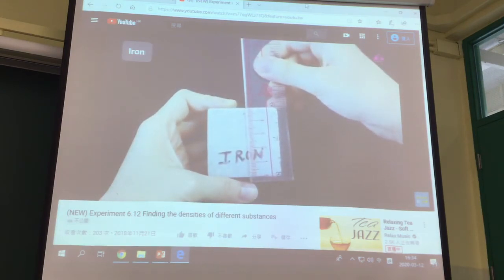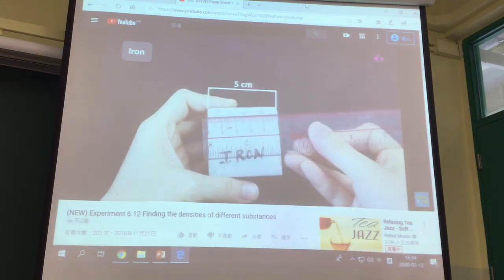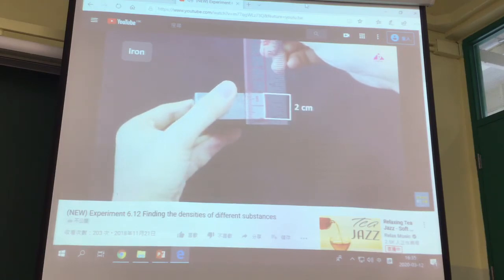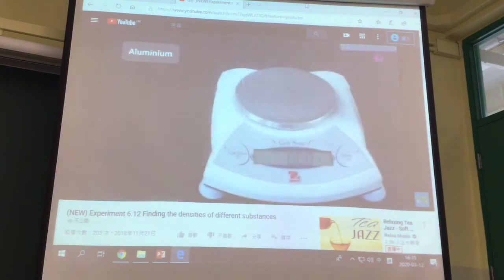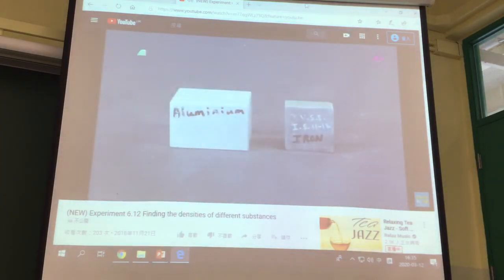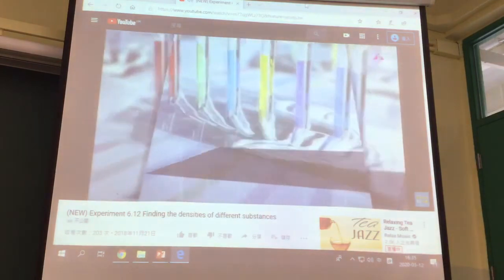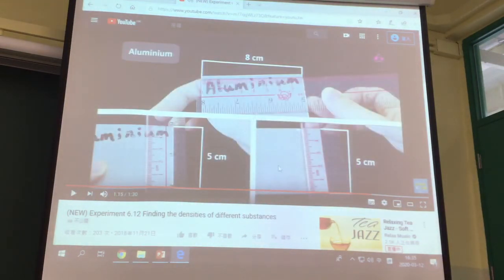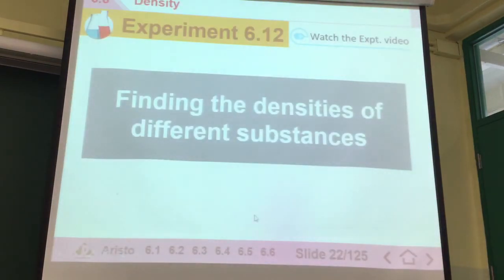Measure the masses and dimensions of the blocks, then calculate their volumes and densities. So that's the volume of aluminum, all the dimensions. This calculation is done. At least we have one set of data. Now let's finish the table in the textbook.